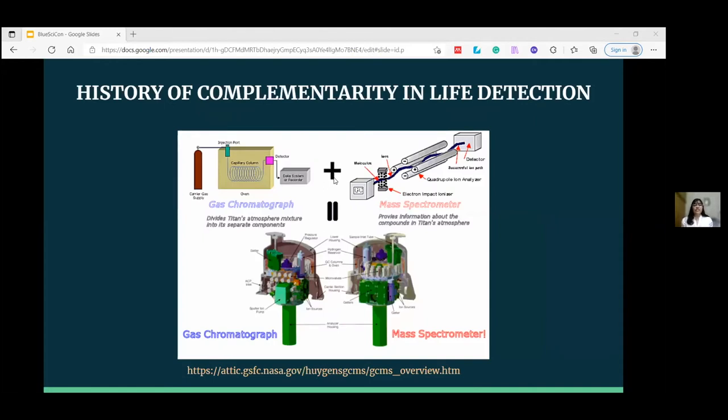If we talk about the history of complementarity in life detection, the best example we know is GCMS. Gas chromatography mass spectrometer was known for studying the composition of planetary atmospheres and monitoring air quality on manned space missions, but when it was combined with gas chromatography, the combination turned into a very powerful scientific tool for life detection with better identification ability than either technique alone.